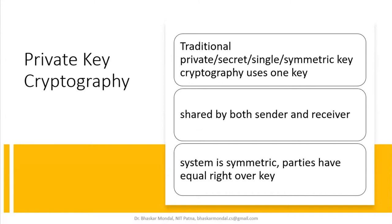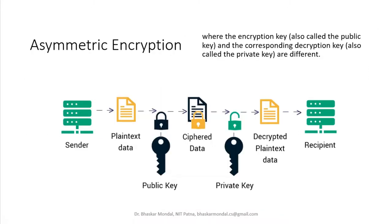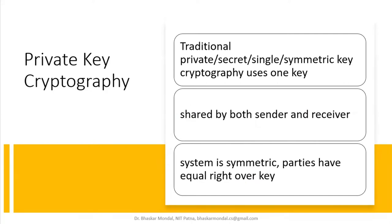Now think about private key cryptography. What we have seen previously is basically private key cryptography — traditional symmetric key cryptography — which uses one key. There was only one key used for encryption and decryption both. That is also called symmetric key cryptography or private key cryptography, where the key is shared by both sender and receiver, and both parties have equal access to the key.